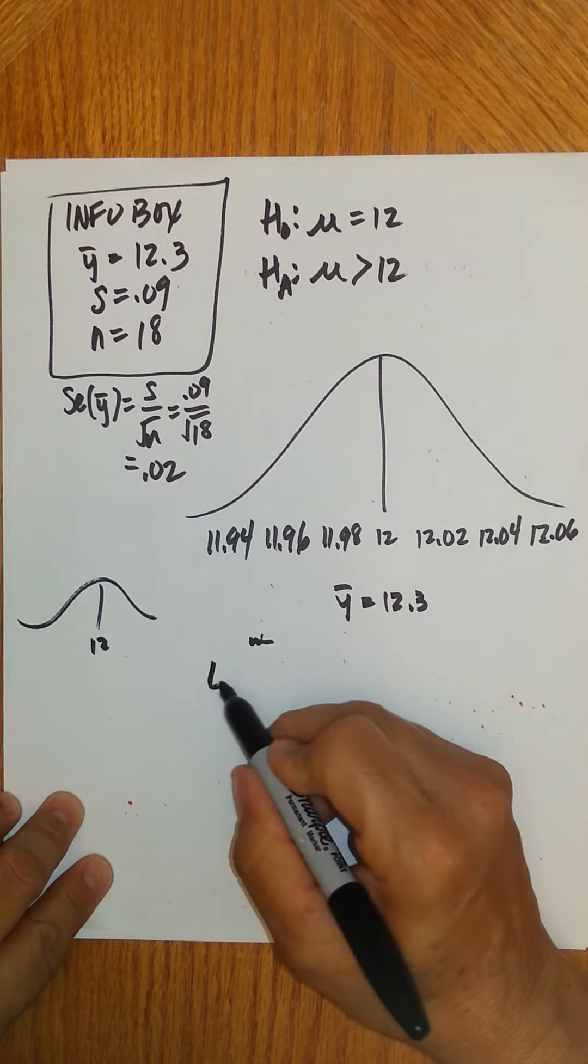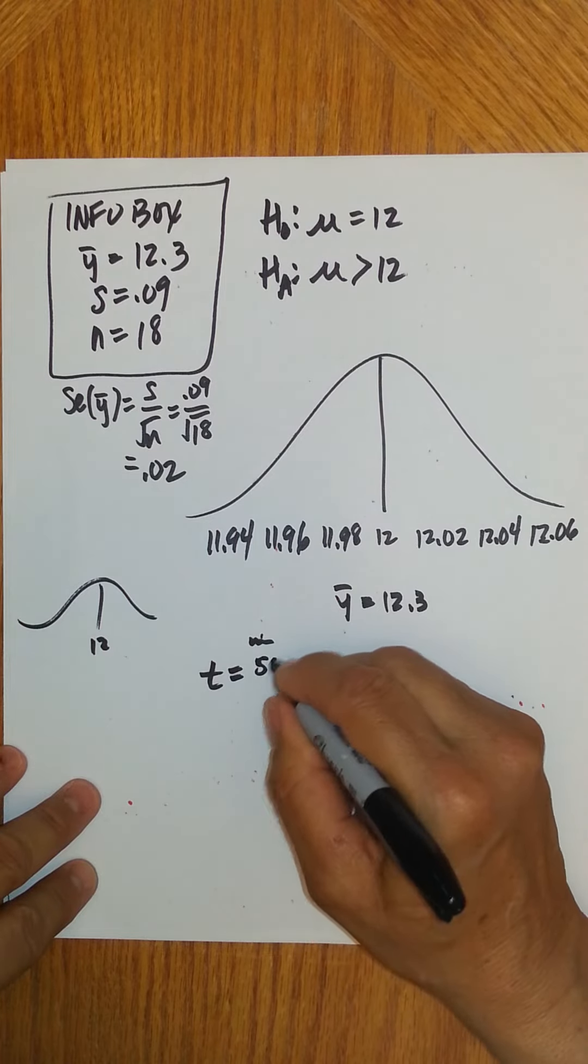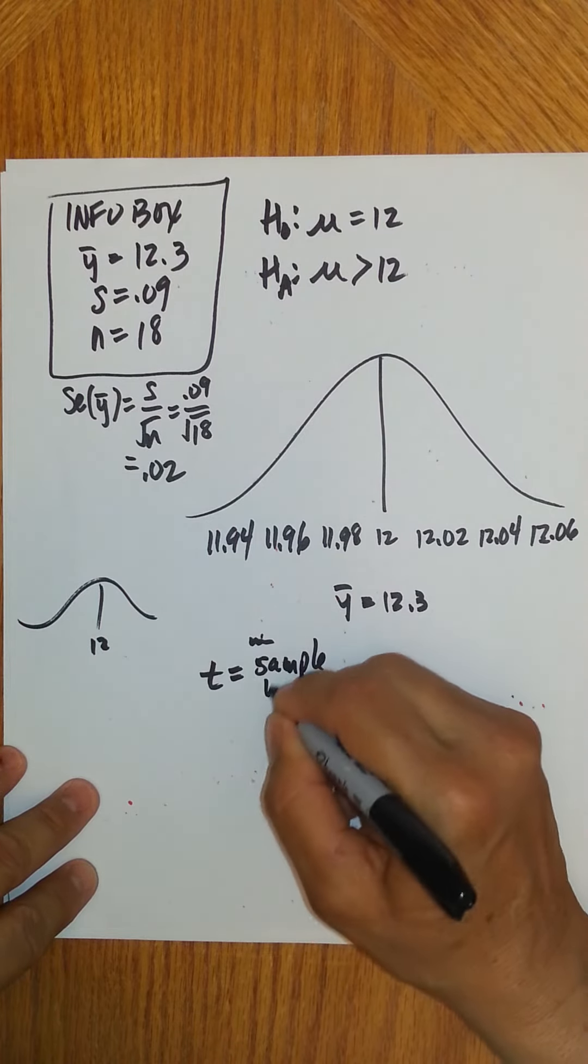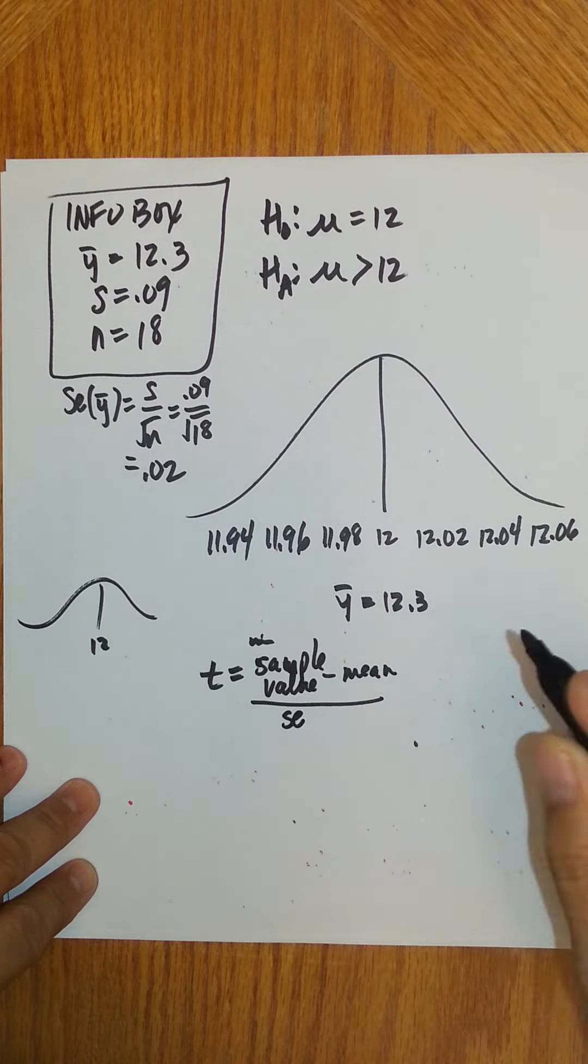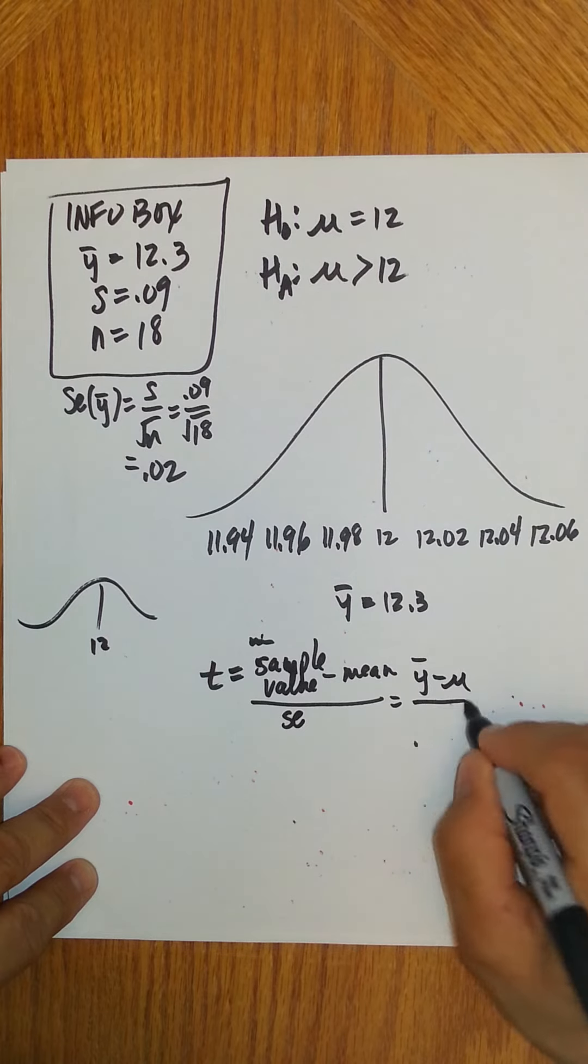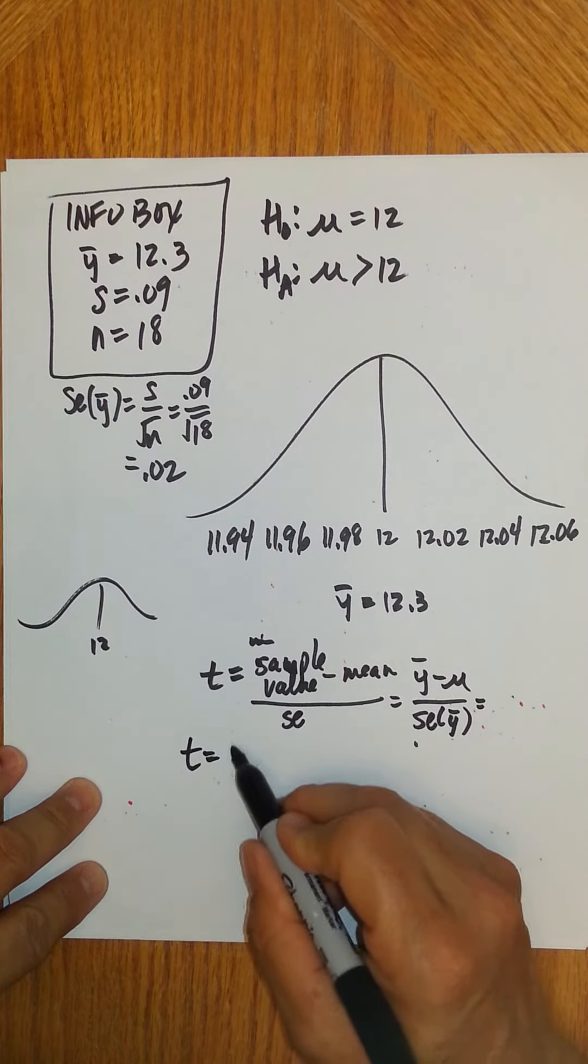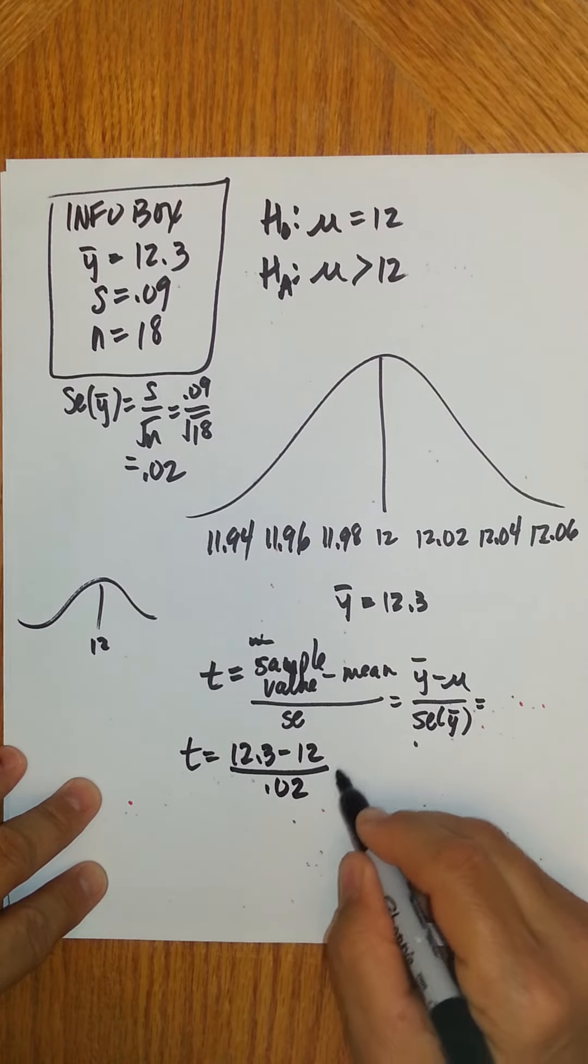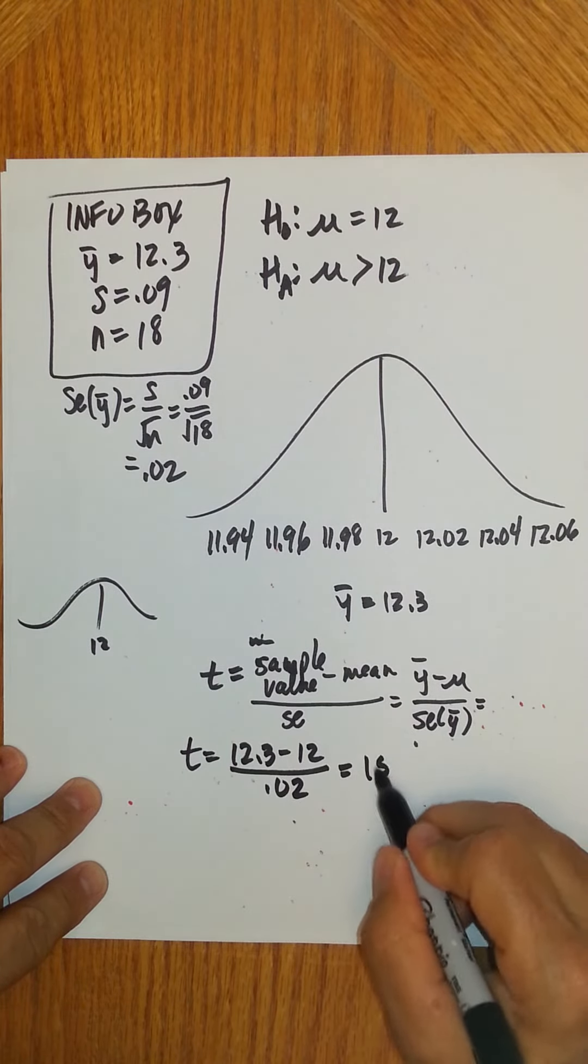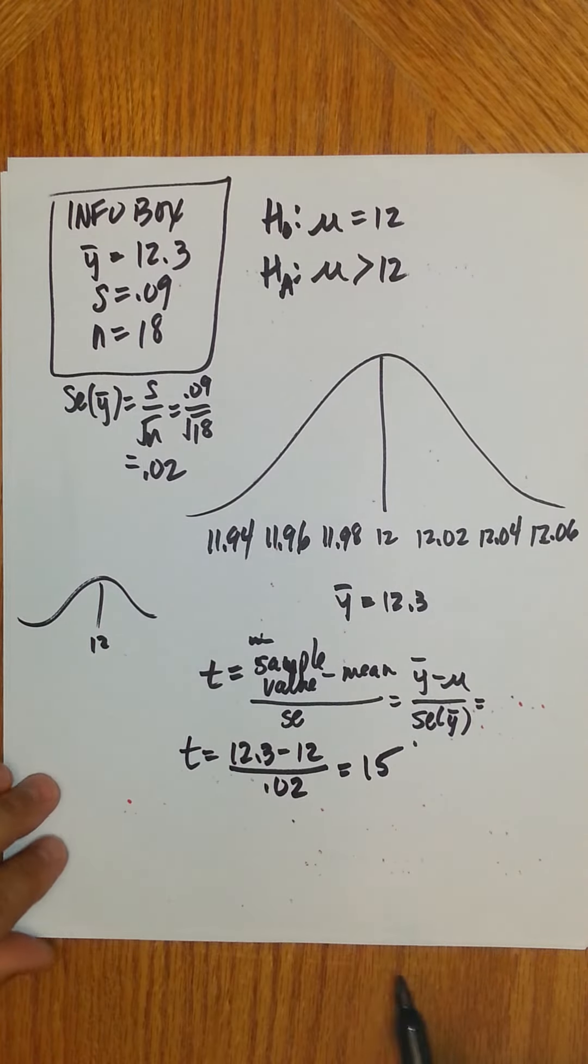That's the theory. Now I find my t-score. t is how far is my sample value from the mean over the standard error. Technically, that's y bar minus mu over standard error of y bar. In our case, we're going to have t is how far is 12.3 from 12 over my standard error, 0.02. And I'll get 15. That's really far. That's what we're trying to say here, that it's that far away.